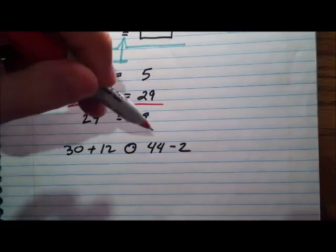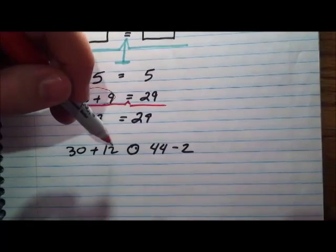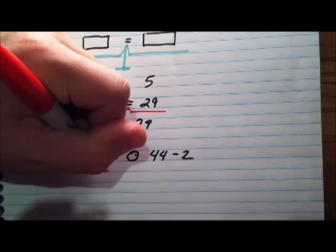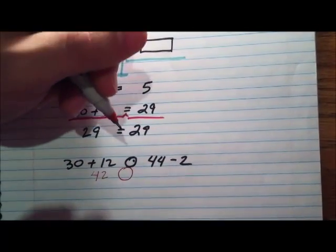We're going to do that, but to two sides now. So we go 30 plus 12, 30 plus 10 plus 2 is 42. So we'll just write it right underneath, 42, and then we'll carry this little empty circle for our equal or not equal sign.